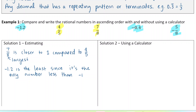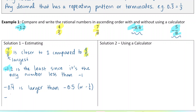So we've now ordered these three. We now need to just look at negative 0.4 repeating and negative 5 over 8. I'm going to think of the benchmark negative 0.5. Negative 0.4 repeating is larger than negative 0.5. And negative 5 over 8 — well, 4 over 8 would be 1/2, so 5 over 8 is a little bit smaller, meaning it is less than negative 0.5.